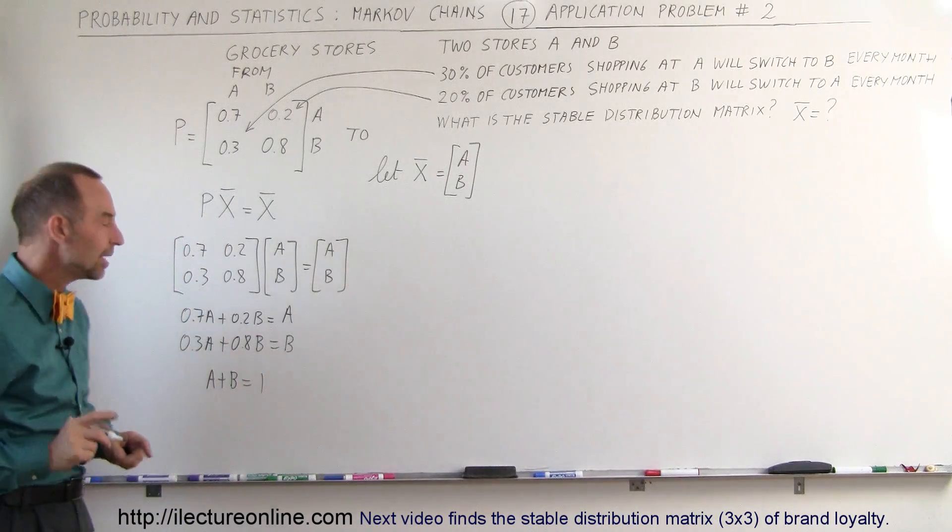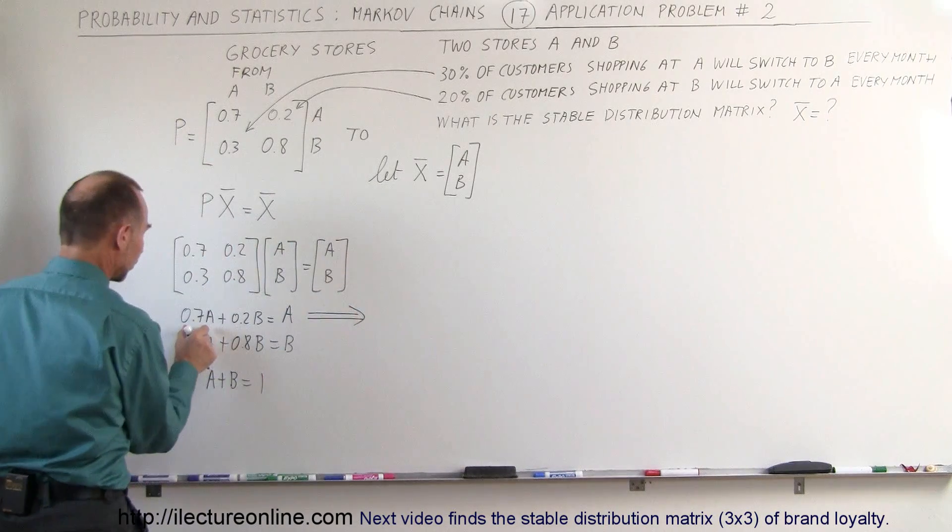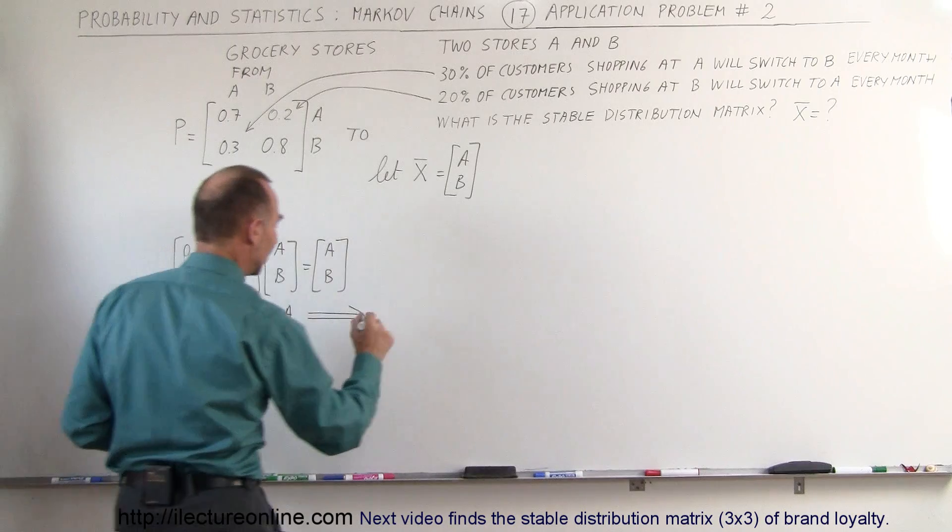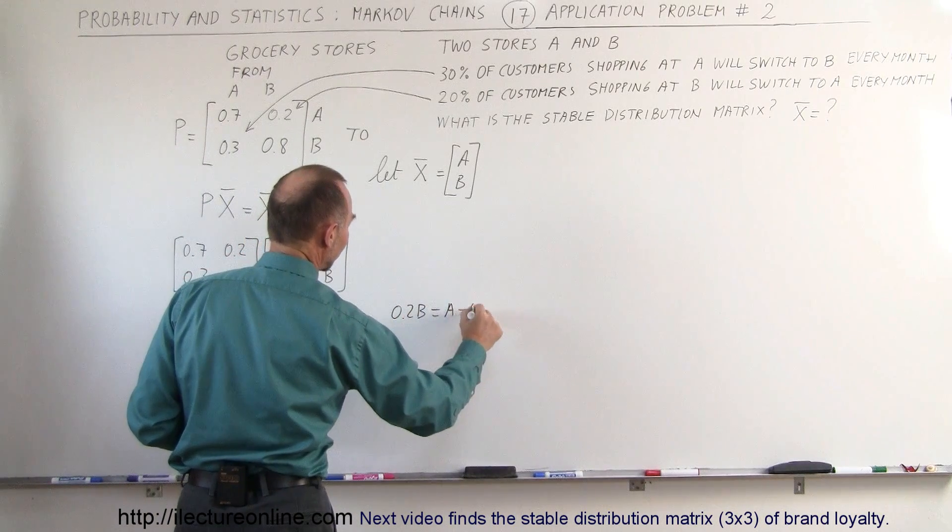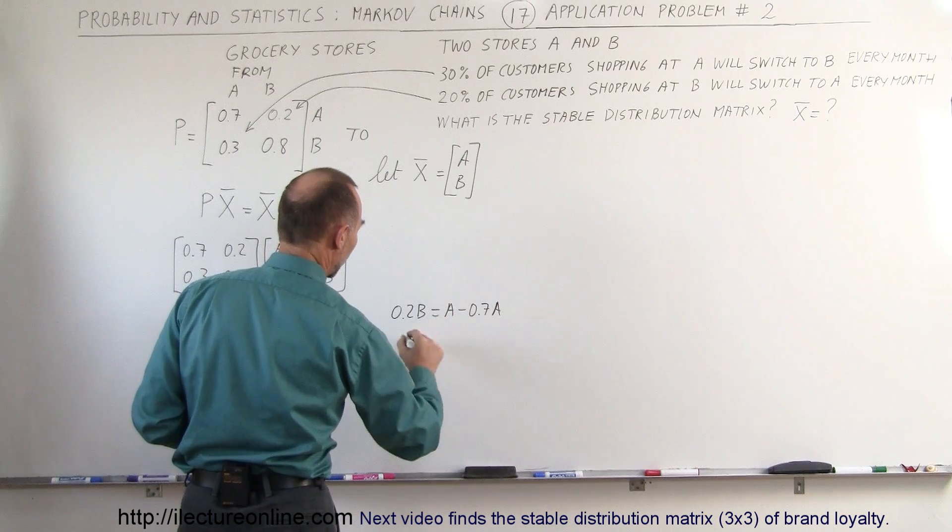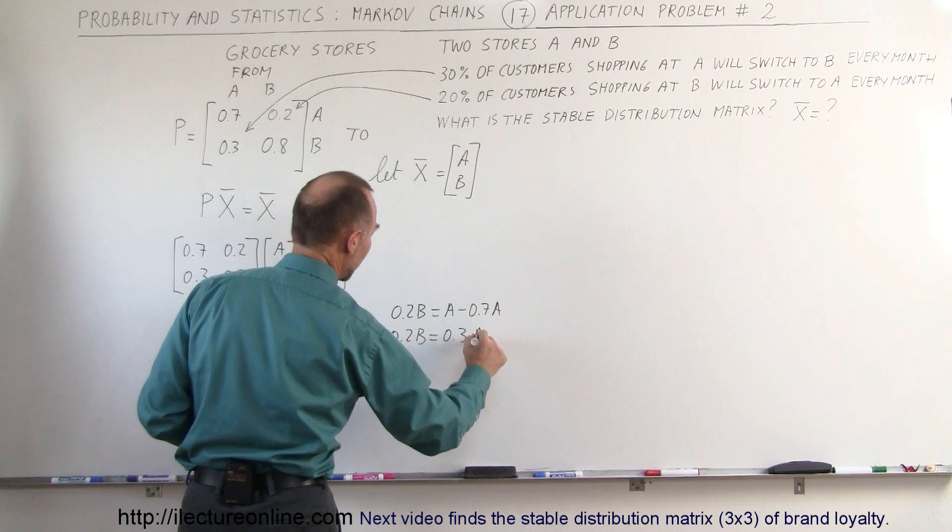So what we're going to do here is we're going to take one of these two equations and solve it for one of the variables in terms of the other. We're going to move the 0.7A to the right side.